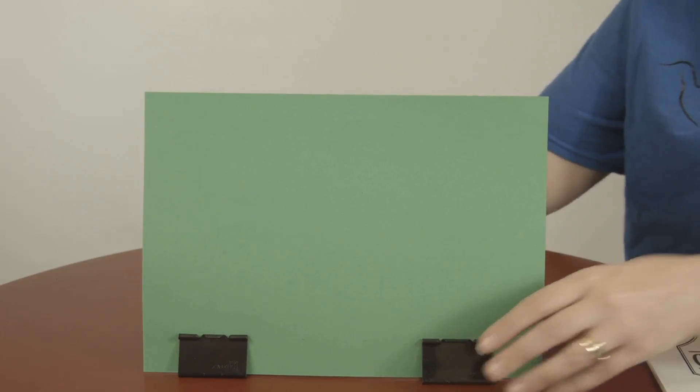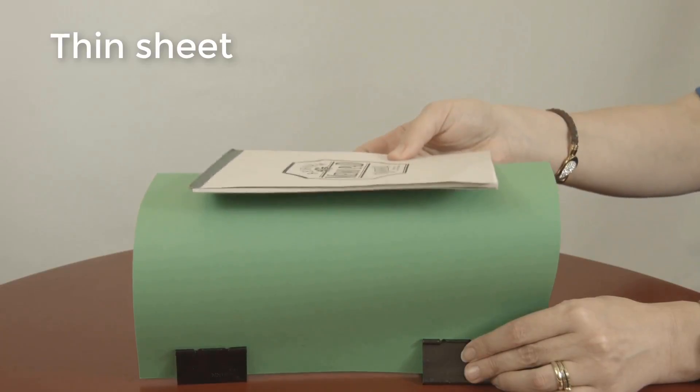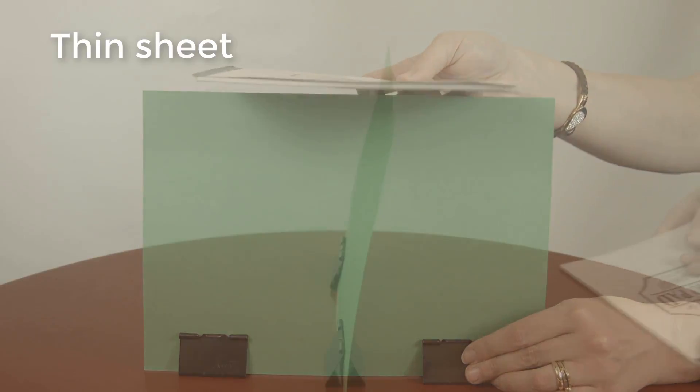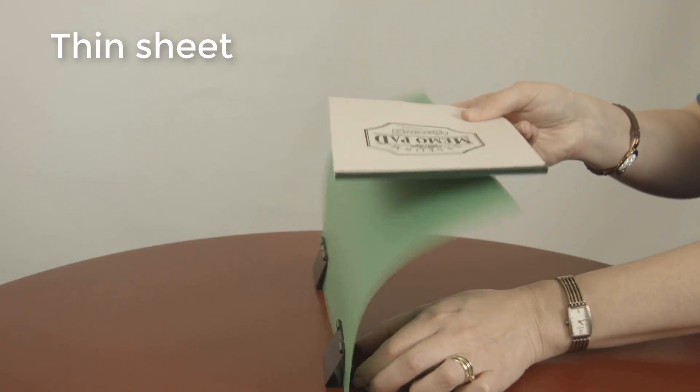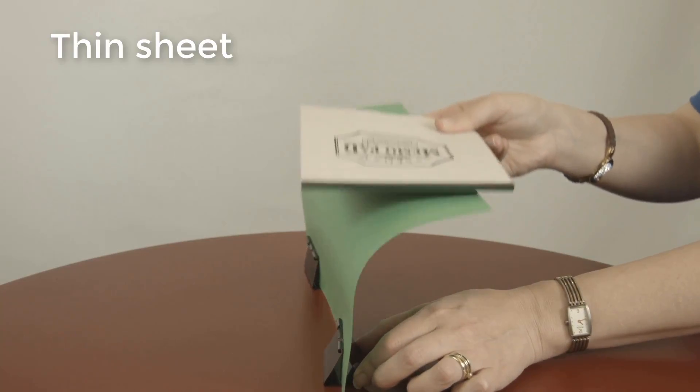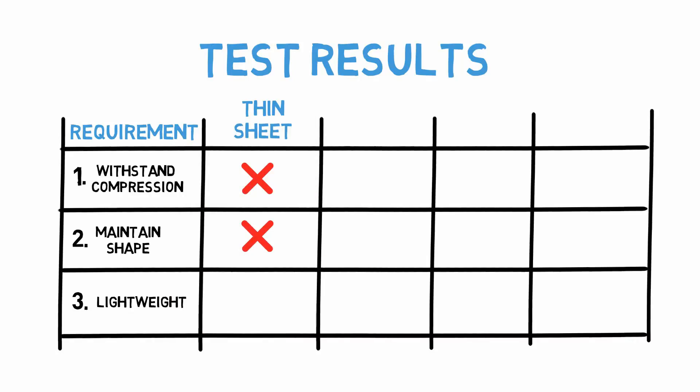To start off, let's see what happens when we take a thin piece of cardstock and try to load it. Hmm, a bit difficult, isn't it? It doesn't look like it can withstand the compression load, and even under a lighter load it seems like it would bend out of shape quite easily. So unfortunately, our cardstock doesn't meet our first two design requirements. It is, however, a lightweight solution, but that doesn't outweigh the other two.